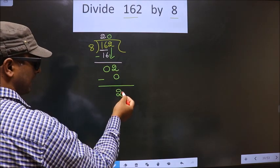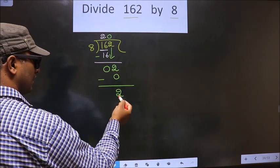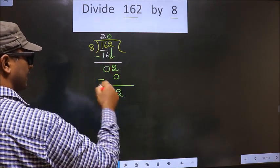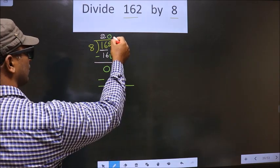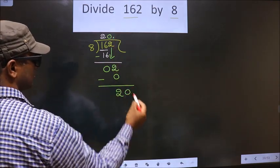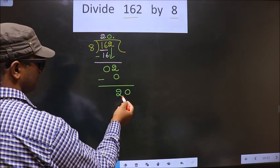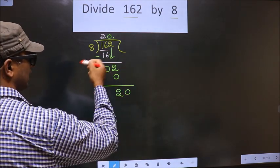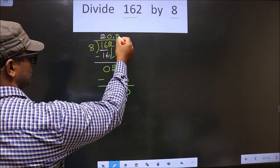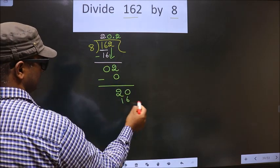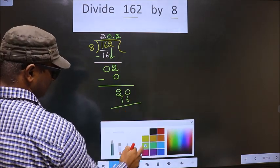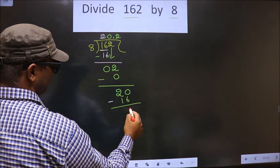Here, we did not bring any number down. Now, 2 is smaller than 8. So, now you can put a dot and take 0 here. Now, here we have 20. A number close to 20 in 8 table is 8 times 2 is 16. You subtract. You get 4.